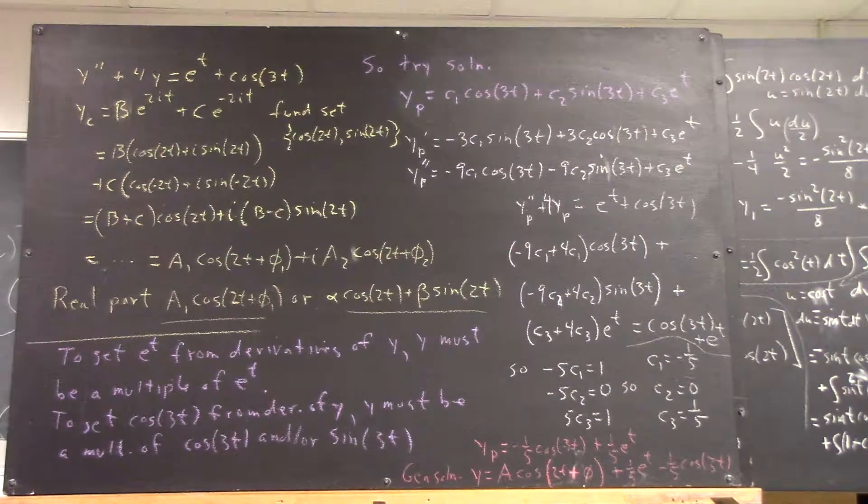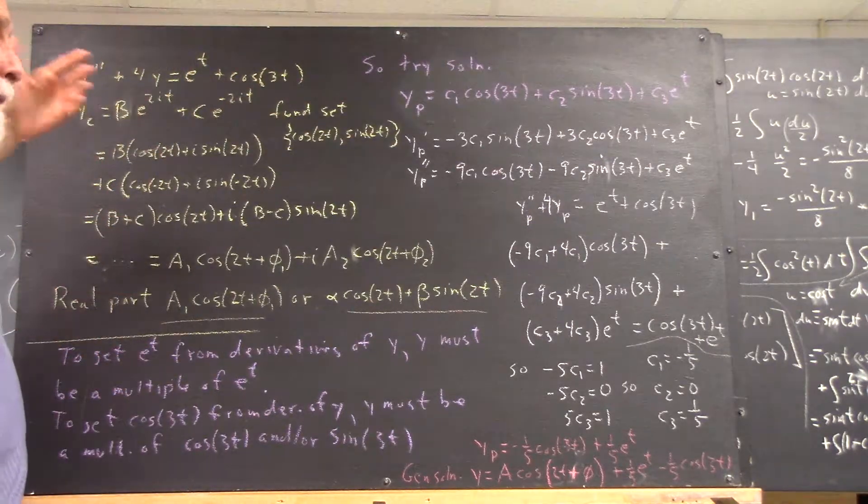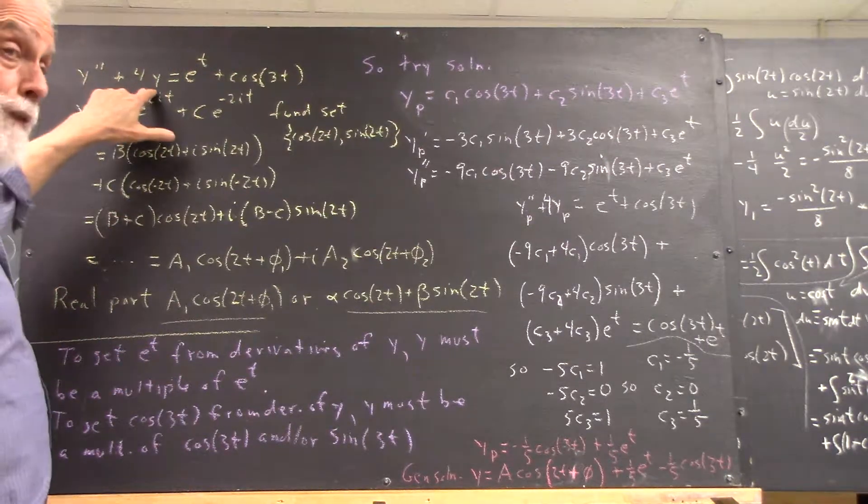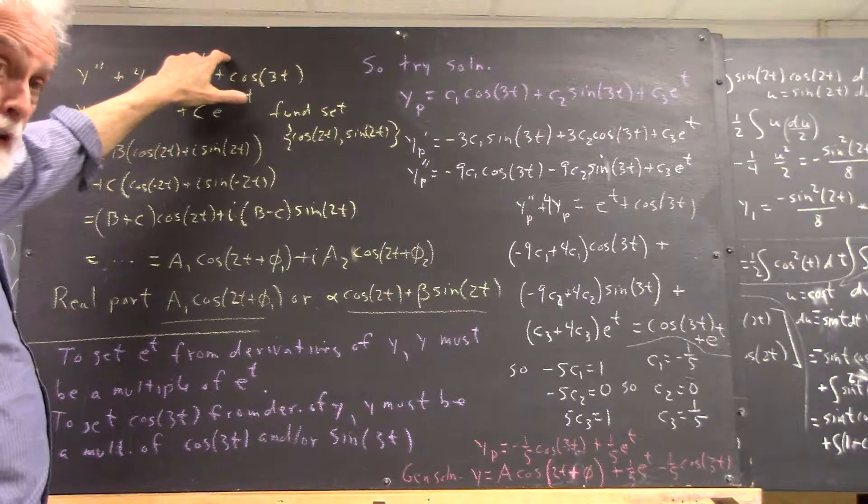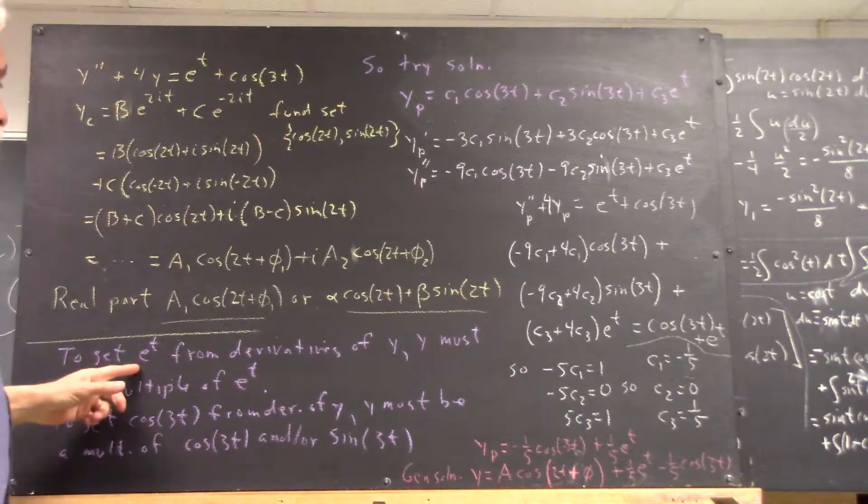Now we want a particular solution. That means we've got to find some function which, when run through this left-hand side, is going to give us an e to the t and also a cosine of 3t.